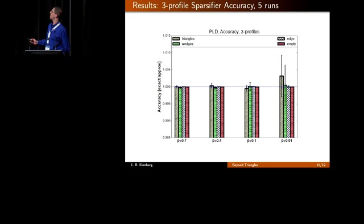First, let's show the accuracy of our three-profile sparsifier. If we look, this is the pay-level domain web graph, and each bar represents a subgraph estimator. As we decrease the sampling probability to the point this series of bars is throwing away 99% of the edges, you can see that the error is still fairly good. These bars represent standard deviation, and this is only about 1% standard deviation. Another thing to note is that in this case, the triangle estimate breaks down first.